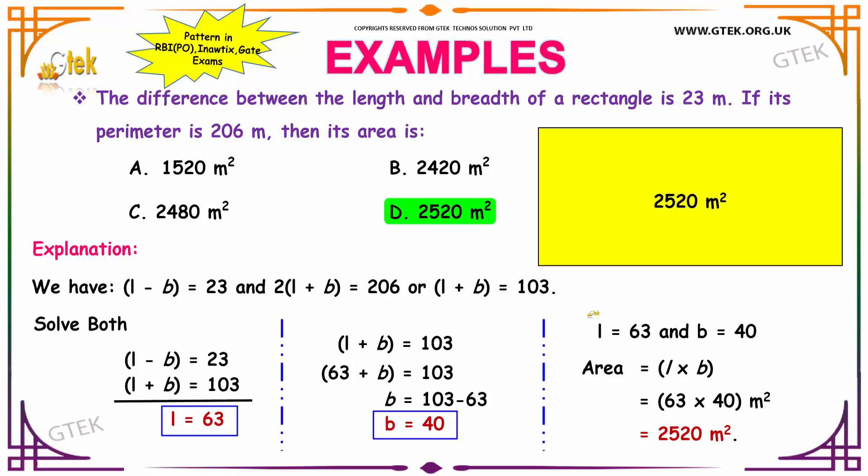So, now we can easily find out the area of the rectangle. Your area has the formula as length into breadth. So, that is nothing but 63 into 40, which is equivalent to 2520 meters square. So, your answer is option D, 2520 meters square.